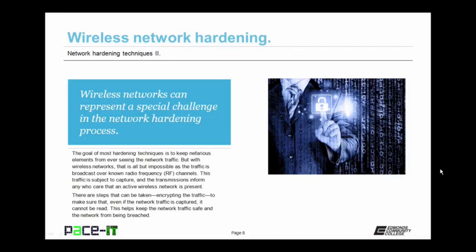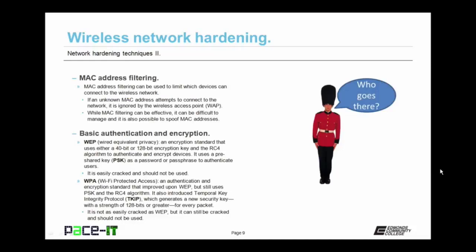One of the first techniques you can use to harden a wireless network is MAC address filtering. MAC address filtering can be used to limit which devices can connect to the wireless network. If an unknown MAC address attempts to connect, it is ignored by the wireless access point. The WAP checks its MAC filter, and if that MAC isn't in the filter, it just drops that requester. While MAC filtering can be effective, it can also be difficult to manage, and it is also possible to spoof MAC addresses.